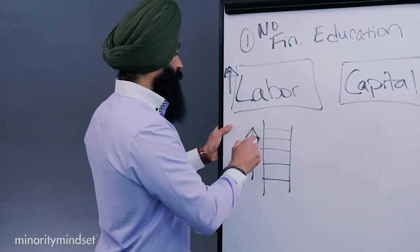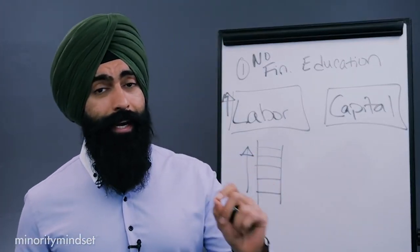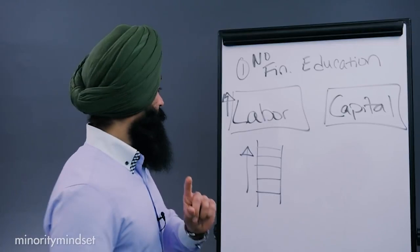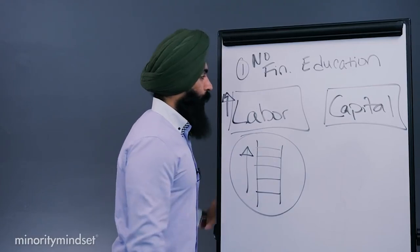So school wants us to climb the corporate ladder. But what people who understand the economic system understand is they don't want to just climb the corporate ladder. They want to own the corporate ladder.